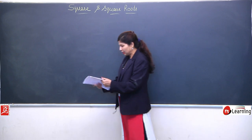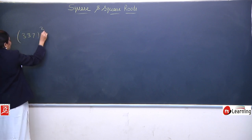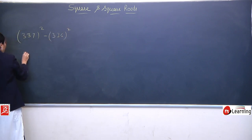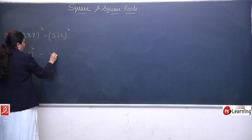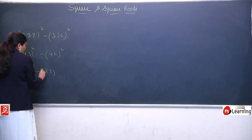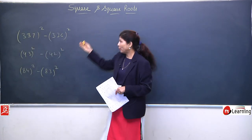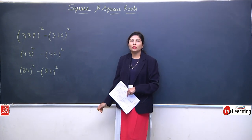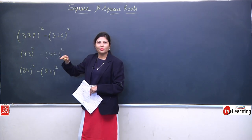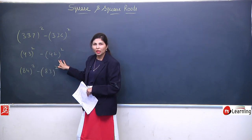If the situation is like this, then what will happen? Like I am having 337 square minus 336 square, or I am having 43 square minus 42 square, or I am having 84 square minus 83 square — aise koi bhi question. Zaroor nahin hai ki ye hi digits hon, but agar pattern aisa aa jaye, then what to do? Either you can solve it by squaring both and subtracting.